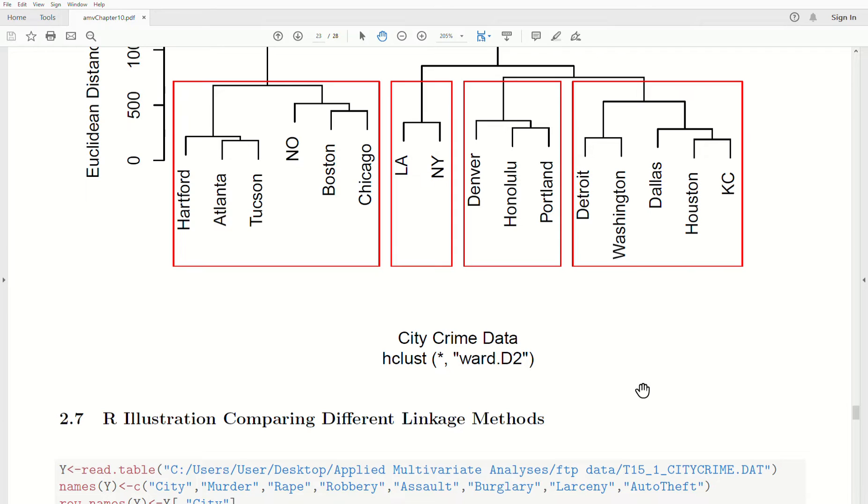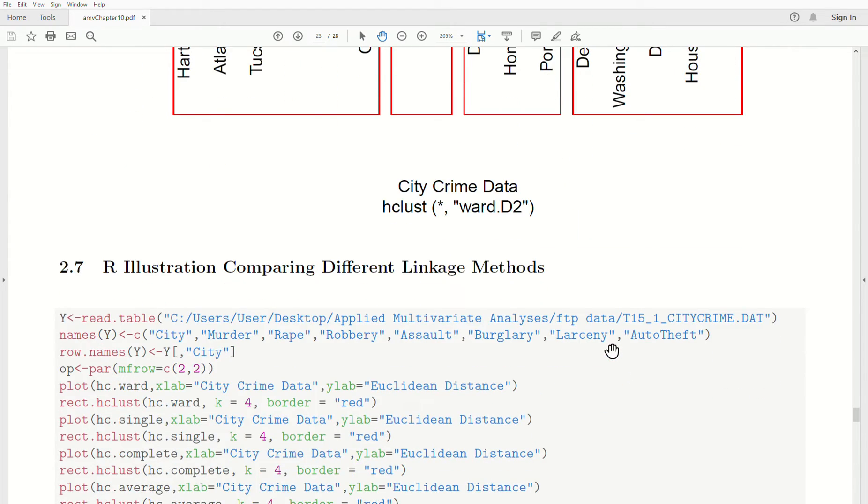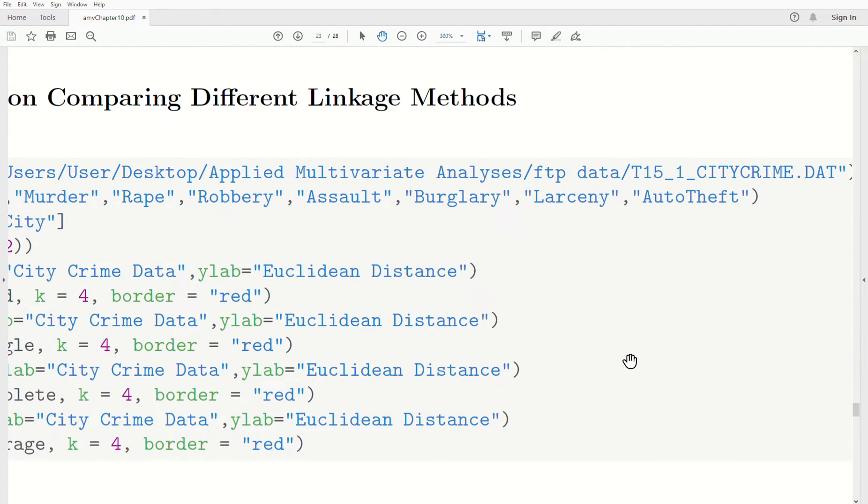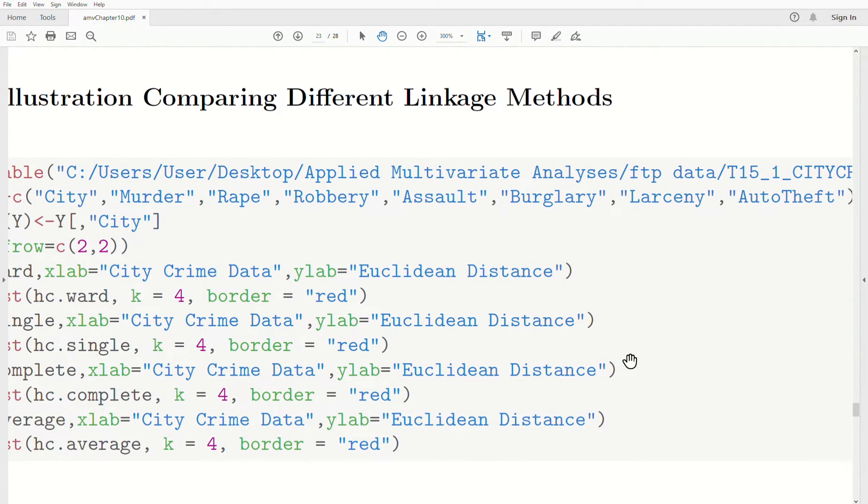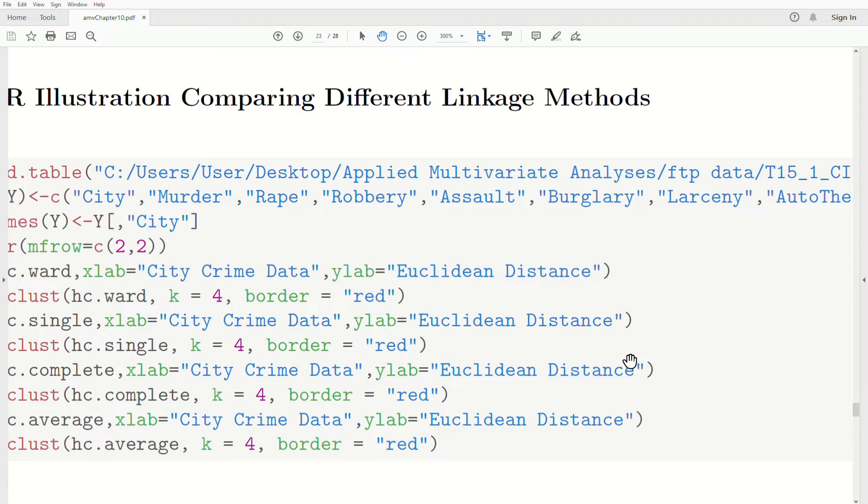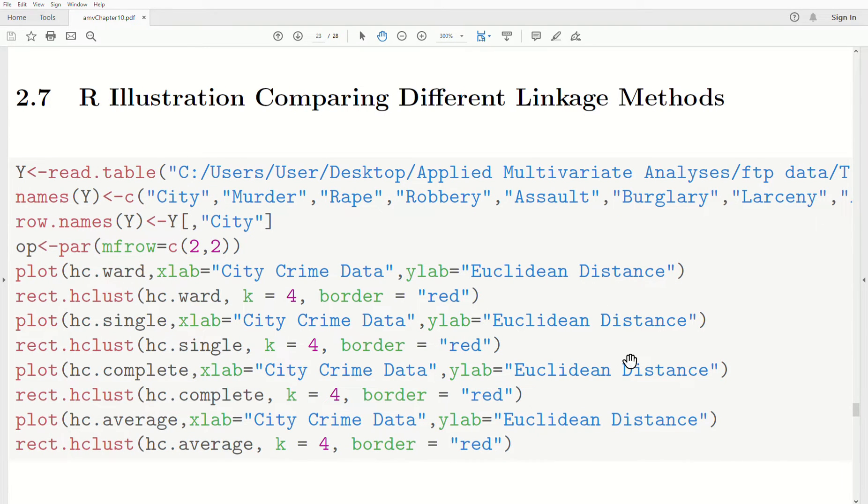Now, in the previous two or three videos, we've looked at several different hierarchical clustering methods. Let's compare them. Here, we use city crime data from the FTP site in all these comparisons.